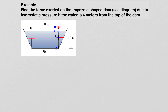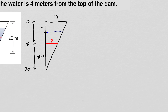Now the top of the dam is zero, and the top of the water level is at 4, since it is 4 meters from the top. The depth x is the distance from the top of the dam, so the actual depth below the water surface is not simply x. We now need to recalculate the triangle geometry using this new coordinate system.